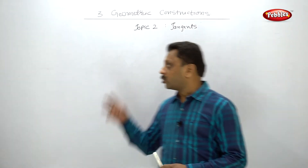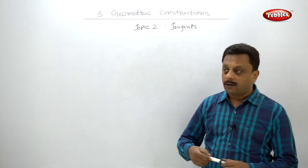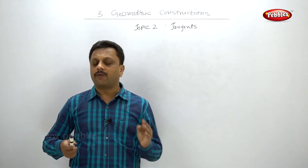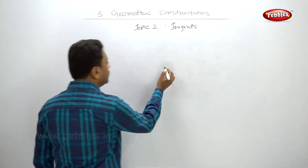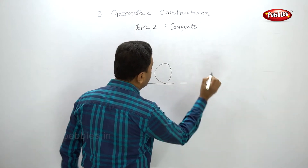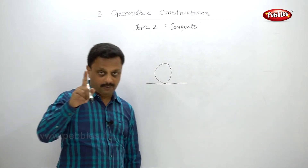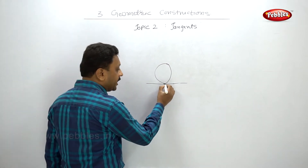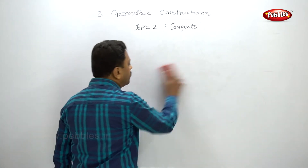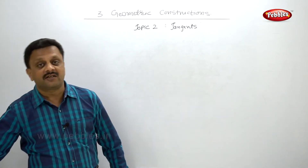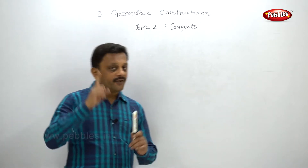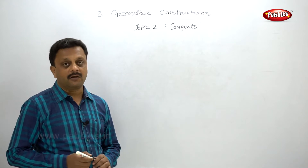Welcome back. For topic 2, we are going to learn about tangents. We have to draw tangents by three methods. First of all, what is a tangent? If you have any circle and some line intersects that circle in only one point, then that line is said to be a tangent to the circle. The line touches the circle in only one point.